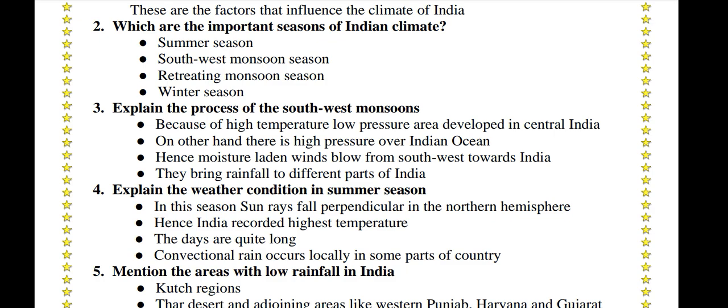Explain the process of the Southwest monsoons. Because of high temperature, a low pressure area develops in central India. On the other hand, there is high pressure over the Indian Ocean. Hence, moisture-laden winds blow from the southwest towards India, bringing rainfall to different parts of India.